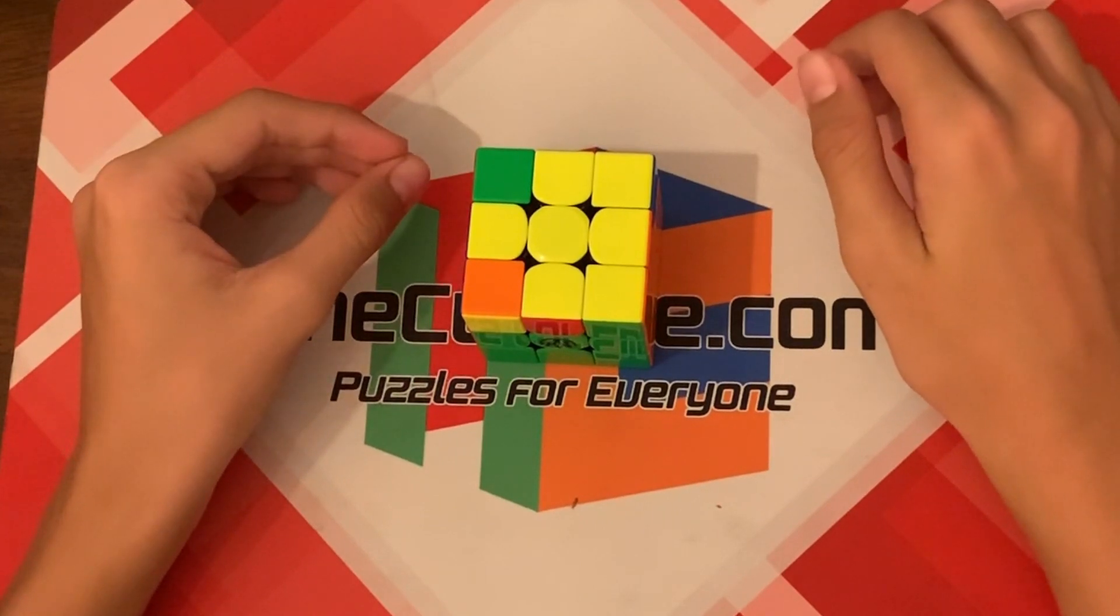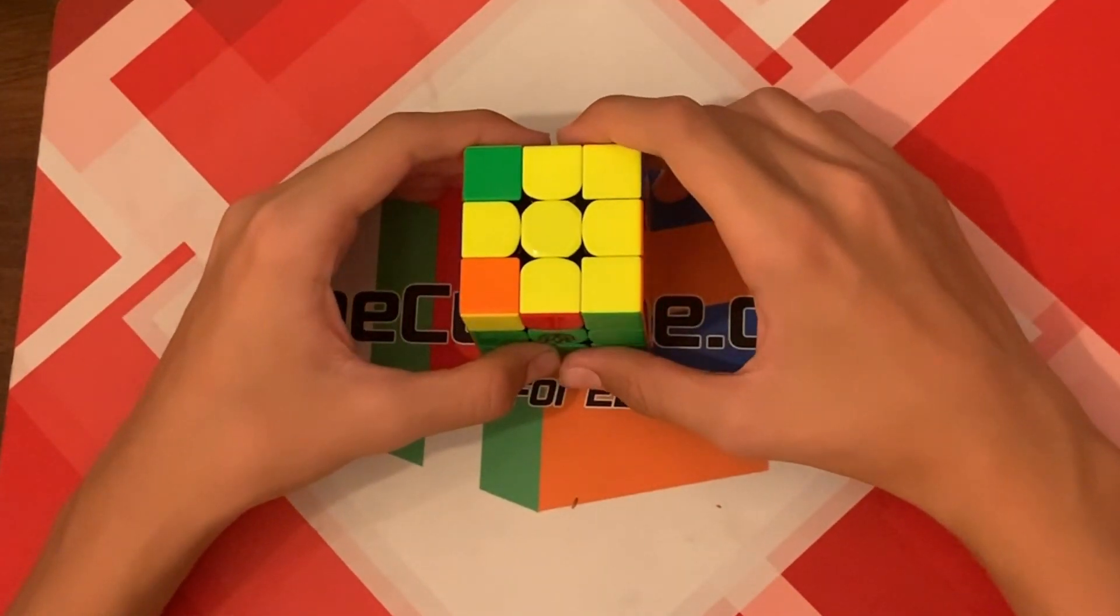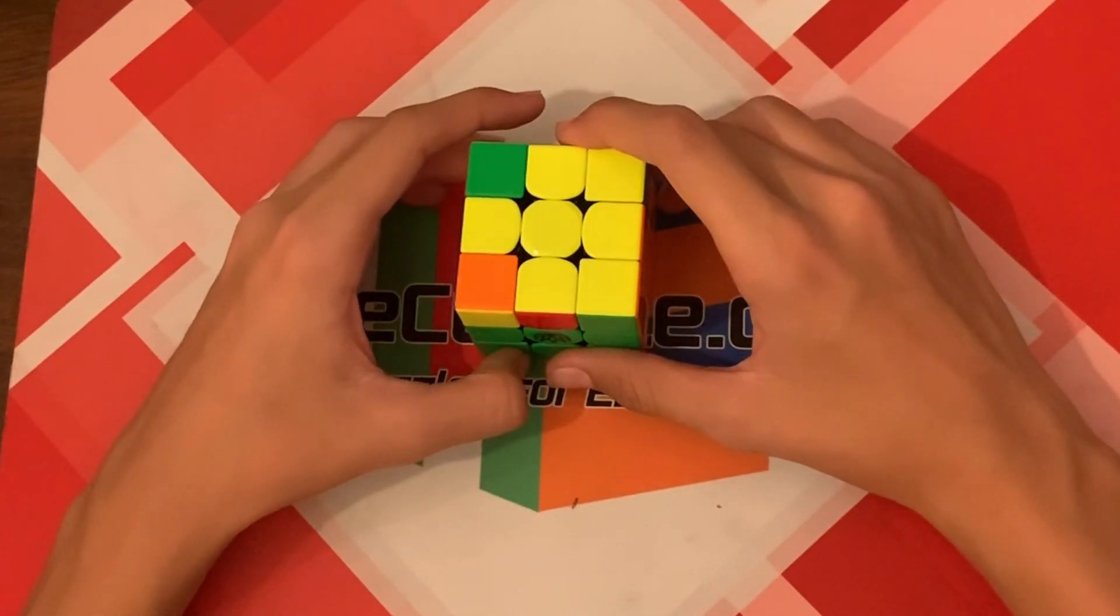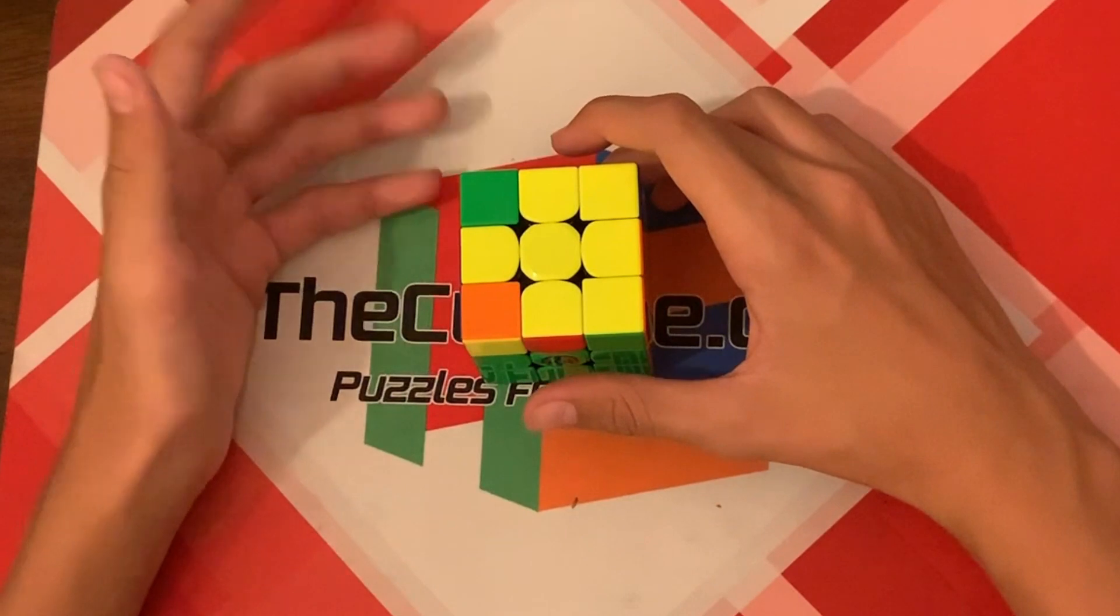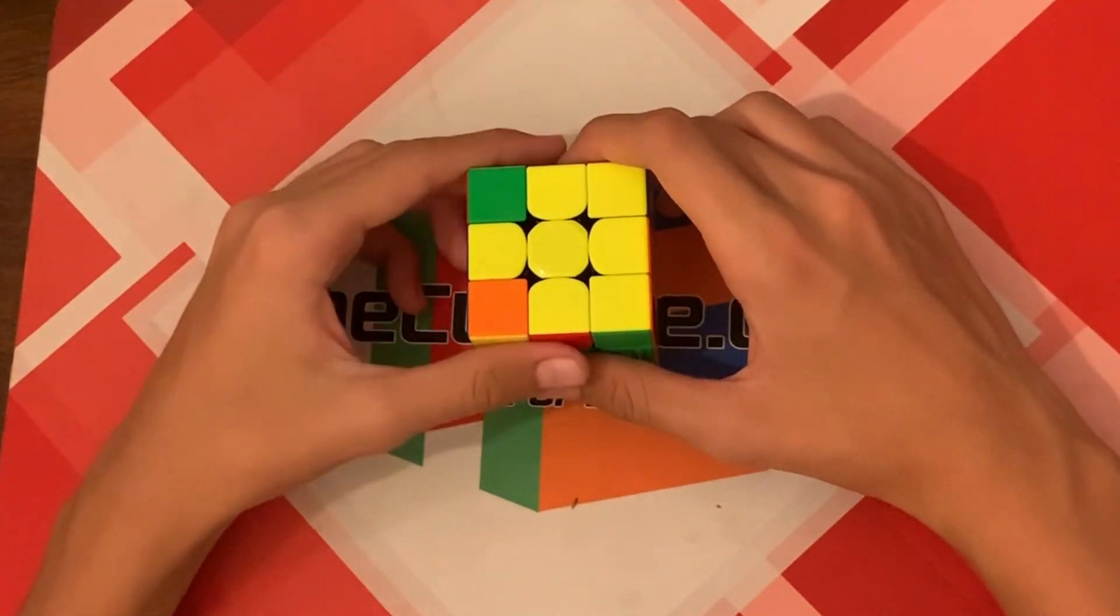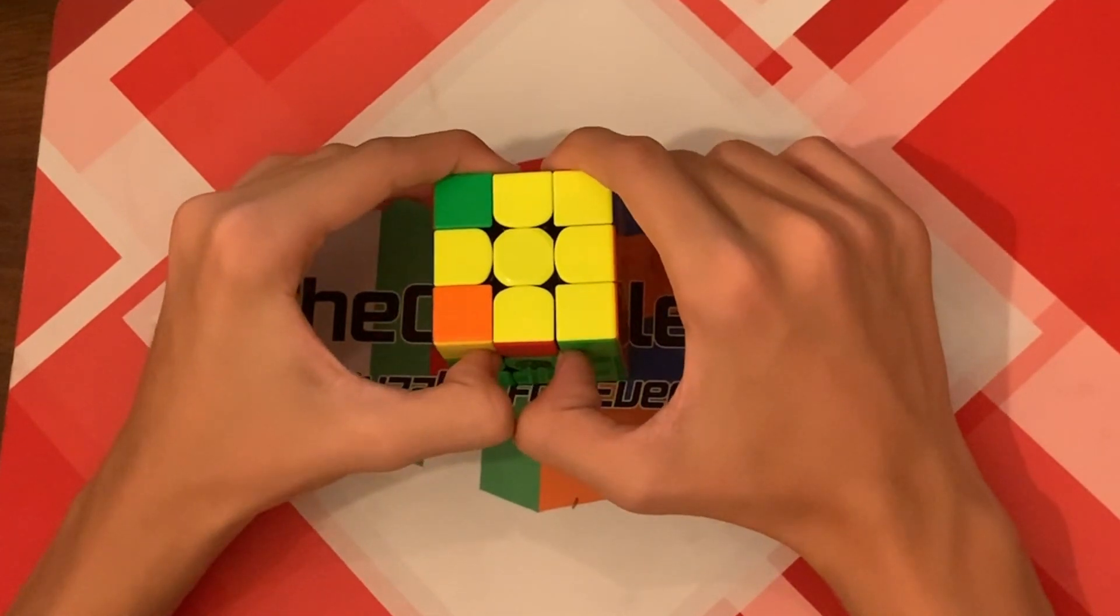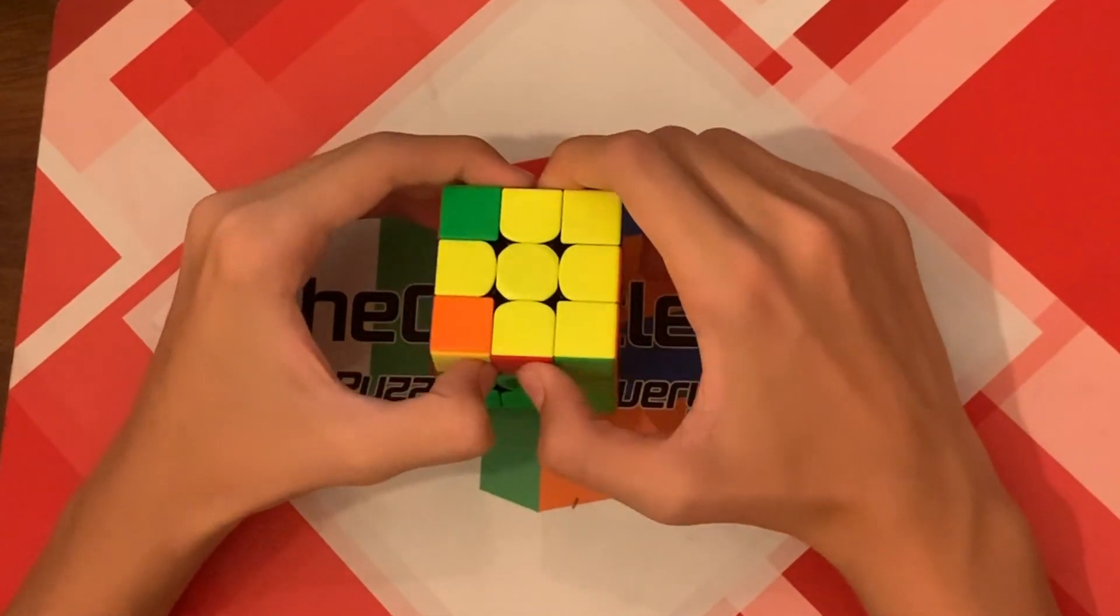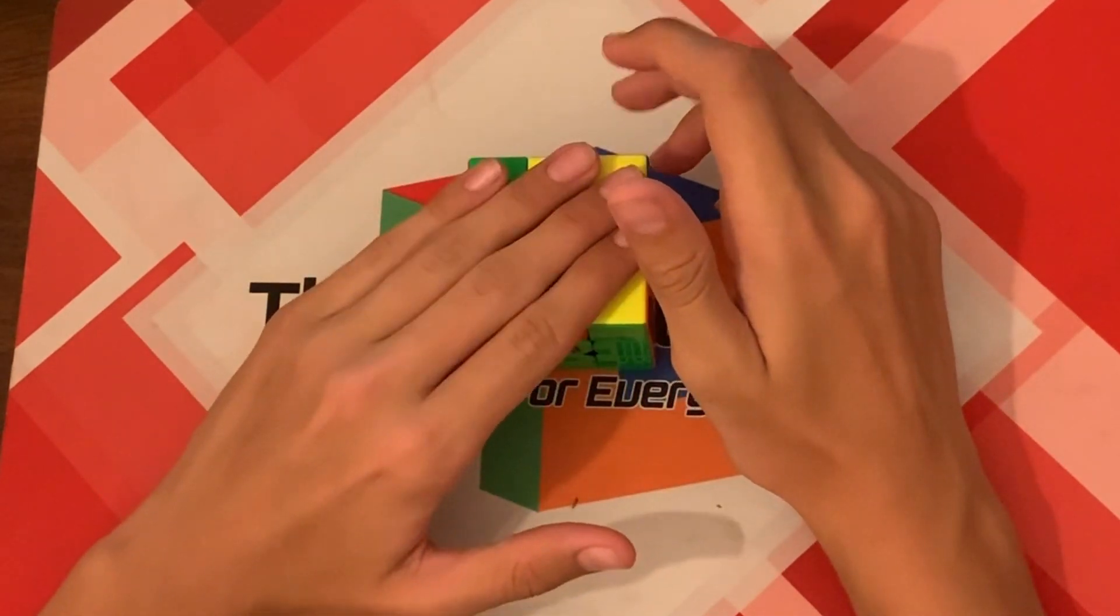Now the next step will completely solve the yellow face and will complete OLL. So there are two main algorithms that you will use in combination with each other to do this. And I will call them algorithm one and algorithm two, or one and two. So the order that you do the algorithms depends on the way that the corners are oriented.